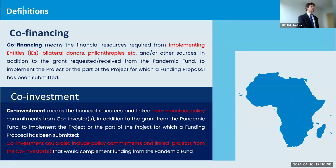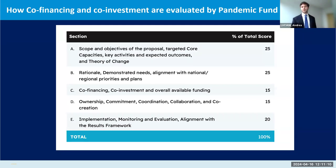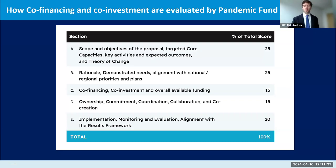How is this evaluated by the Pandemic Fund? Out of the total evaluation score, 15% goes to co-financing, co-investment, and overall available funding. This is quite high because the Pandemic Fund looks for your proposals to be a multiplier of their funding. They need to be able to say: for each dollar invested in this proposal, they've been able to multiply and mobilize X amount of dollars.